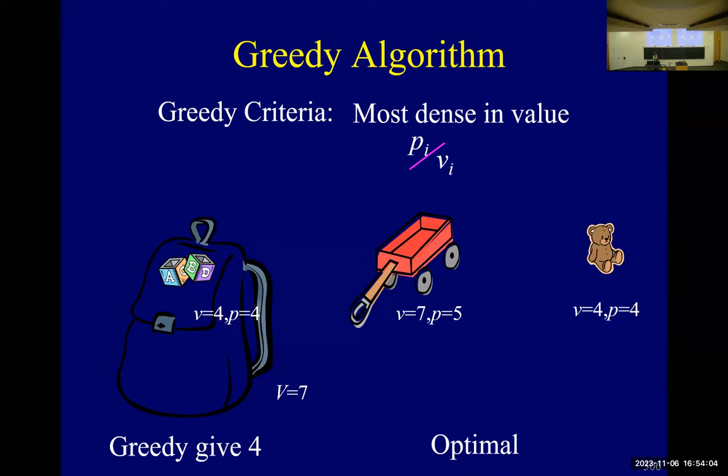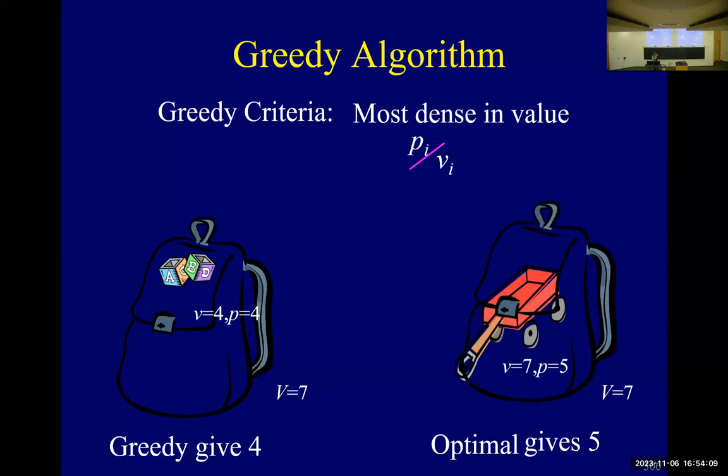And so the optimal would take the wagon, because even though its price per volume is smaller, it has more volume, so it has more price.